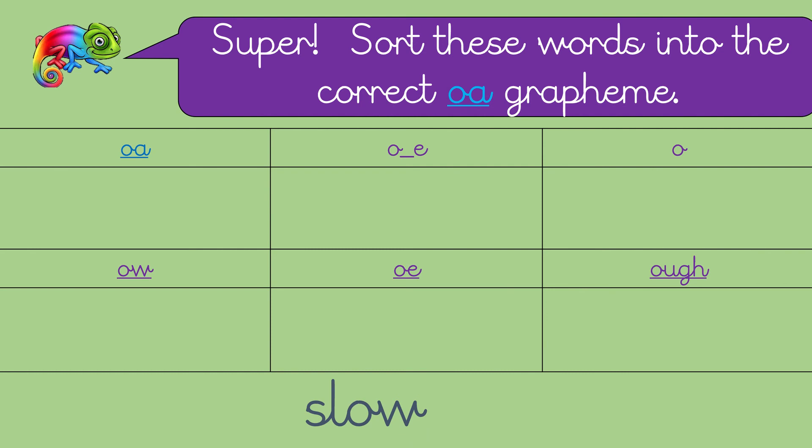What's this word? Yeah, it's the word 'slow' and what makes the o sound in this word? That's right, the o and the w. What word's this? Excellent, it's the word 'goes' and what makes the o sound? Well done if you said o and the e. And this word? Yep, this is the word 'though', even though he was tall he still couldn't reach the highest shelf, and what makes the o sound in this word? O-u-g-h.